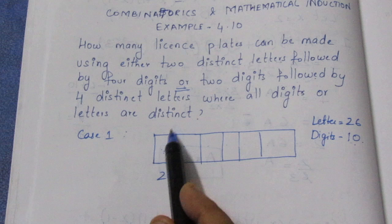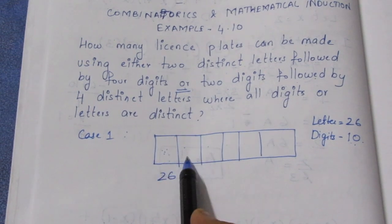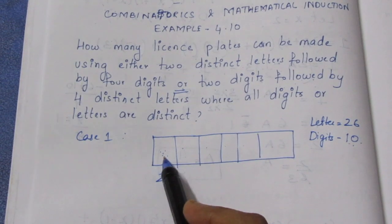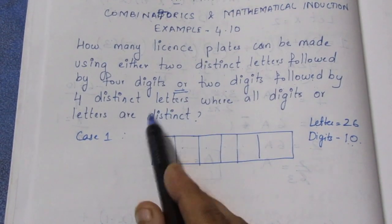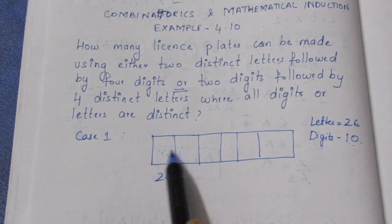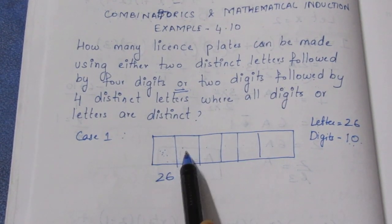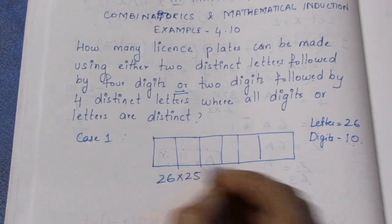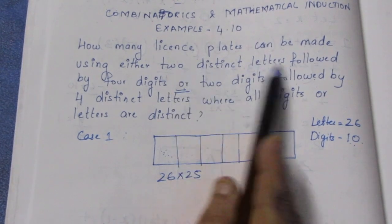So here's how you fill it: 2 letters then 4 digits. The letters are 26 times 25.